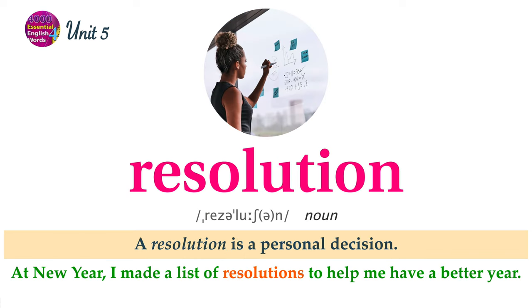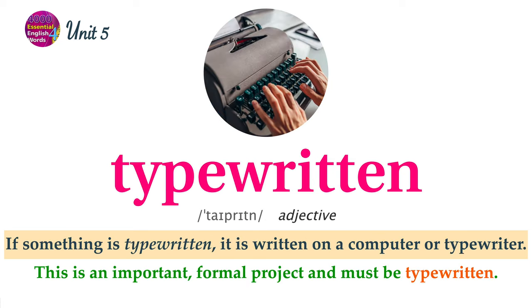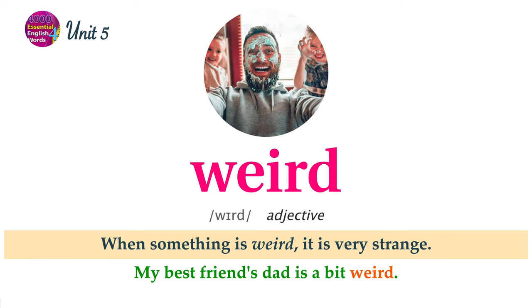A resolution is a personal decision. At New Year, I made a list of resolutions to help me have a better year. A semester is a portion of a school year. Jack is in his second semester of college. If something is typewritten, it is written on a computer or typewriter. This is an important, formal project and must be typewritten. When something is weird, it is very strange. My best friend's dad is a bit weird.